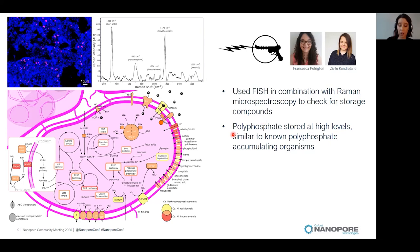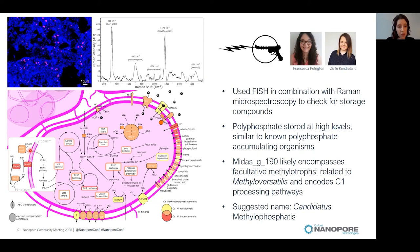Looking further at the rest of the genome, it had a methanol dehydrogenase, single-carbon assimilation and dissimilation pathways, suggesting it was probably a methylotroph as well. It was also closely related to the genus Methyloversatilis, a known facultative methylotroph. We concluded that this organism is likely also using methanol, and suggested the name Candidatus Methylophosphatis.